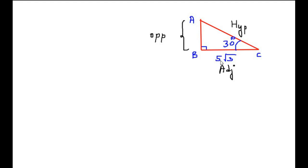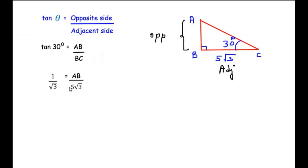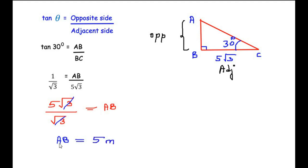Since the adjacent side is given and we need the opposite side, we do not need the hypotenuse. The trigonometric ratio relating the angle to the opposite and adjacent sides is tan. So tan(30°) = AB / BC. Tan(30°) = 1/√3 = AB / 5√3. Cross-multiplying: AB = 5√3 / √3. The √3 cancels from numerator and denominator, giving AB = 5 meters.